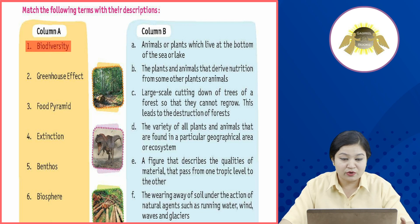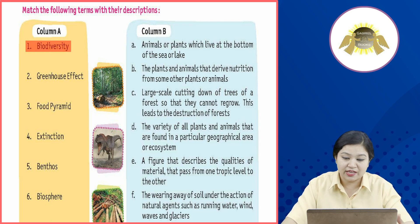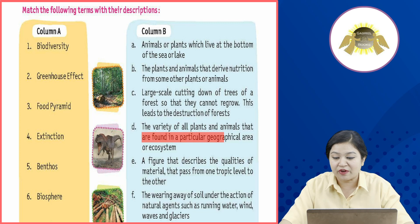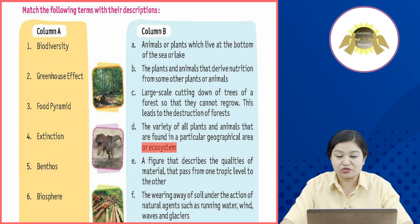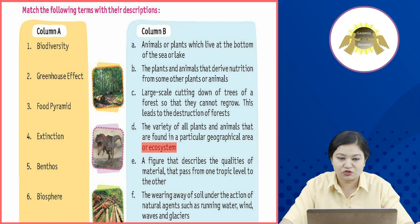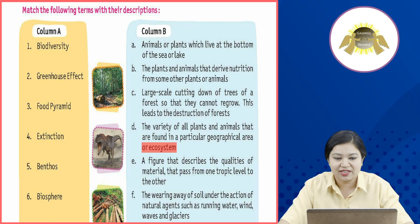First: Biodiversity. Biodiversity refers to the variety of all plants and animals that are found in a particular geographical area or ecosystem — the area where you have a variety of plants and a variety of animals. That area is called Biodiversity.